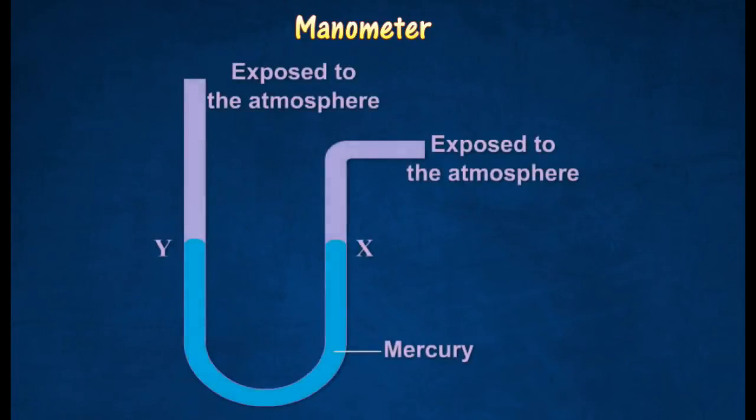Initially, both arms of the U-tube are exposed to the atmosphere. The surfaces of liquid, Y and X, are at the same horizontal level. This is caused by the same atmospheric pressure exerting on both surfaces.